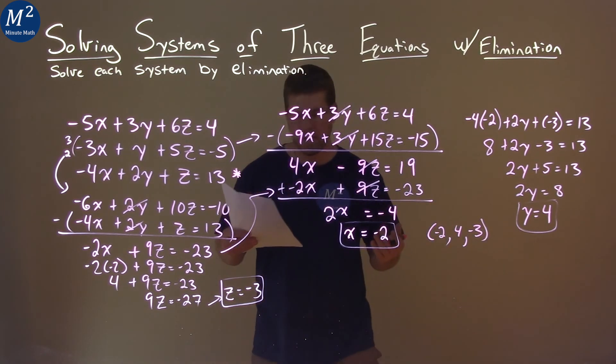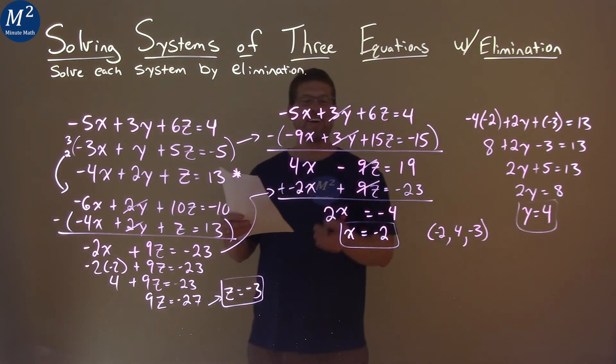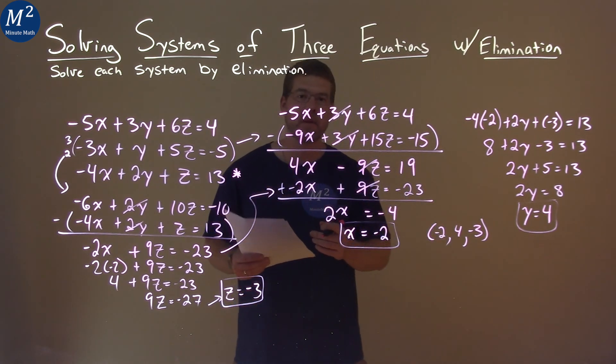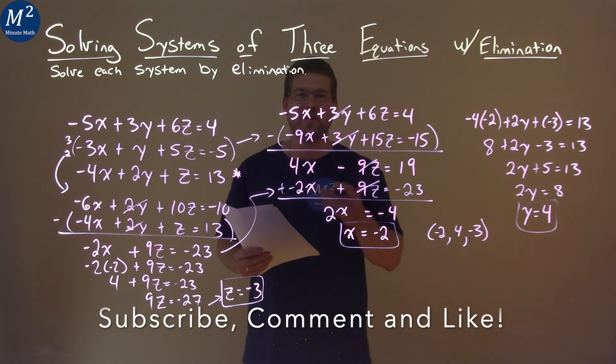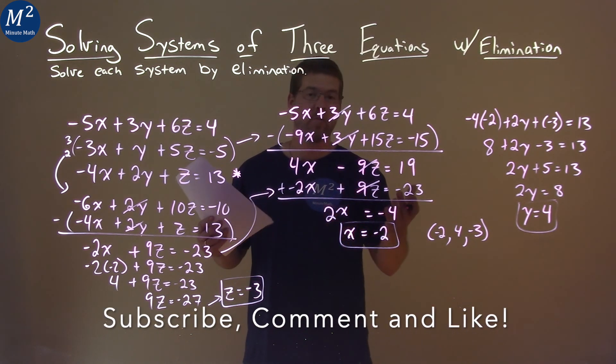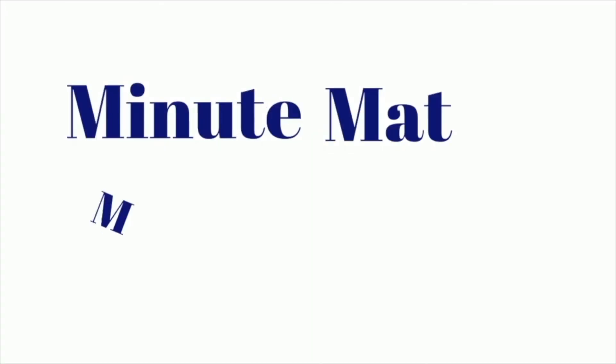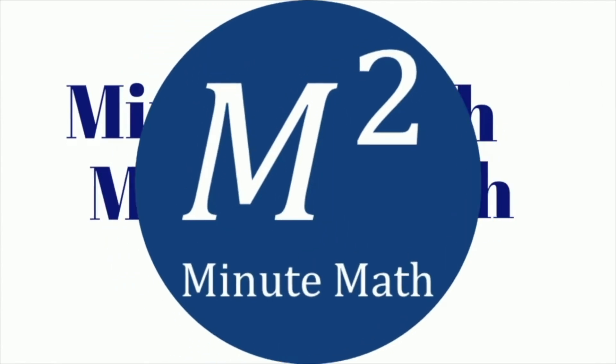And so our final answer here, make sure I have it right, which we're good. Our final answer is x is negative 2, y is 4, and z is negative 3. I hope we found this video helpful for you, and if you did, please subscribe to this YouTube channel and like this video. This helps us make more free math lessons for you and for everyone else. So as always, thanks for watching. Minute Math, Minute Math, when you need help, you use Minute Math.